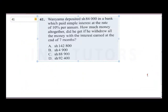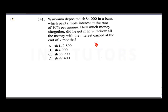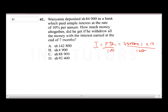Question 41: Wyam deposited 84,000 shillings in a bank that pays simple interest at 10% per annum. How much money altogether did he get if he withdrew all the money with interest at the end of seven months? Simple interest formula is PTR over 100, where P is principal, T is time, and R is the rate.